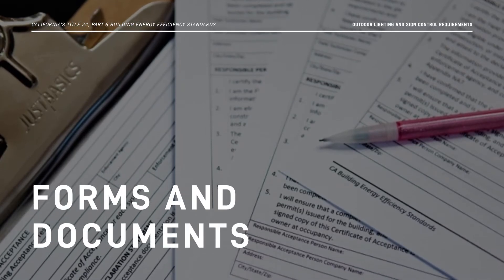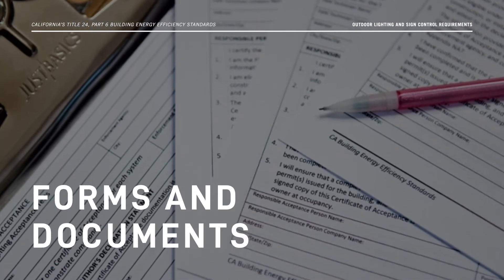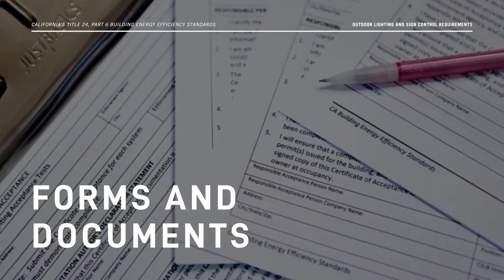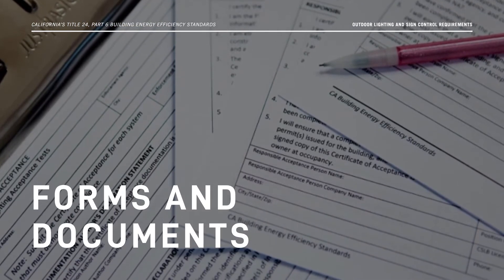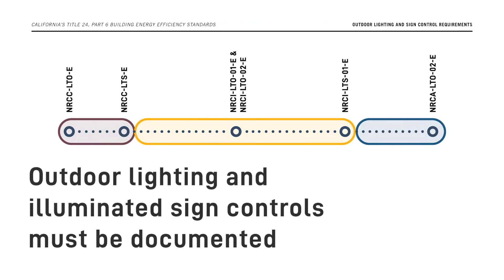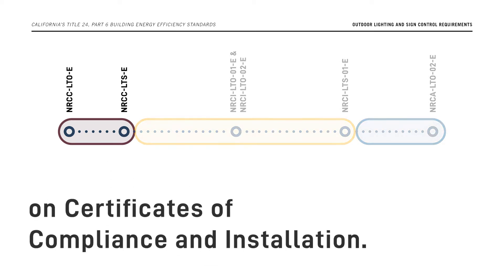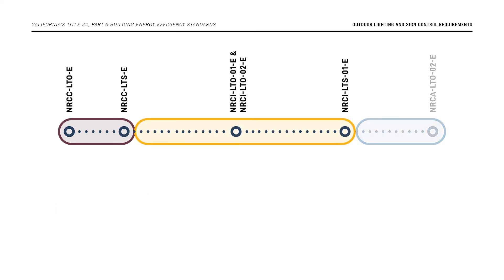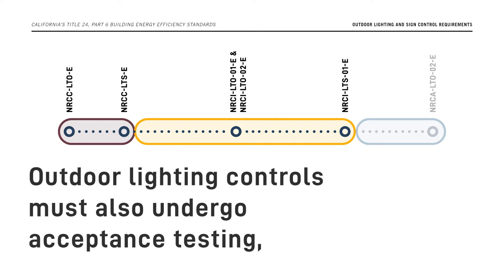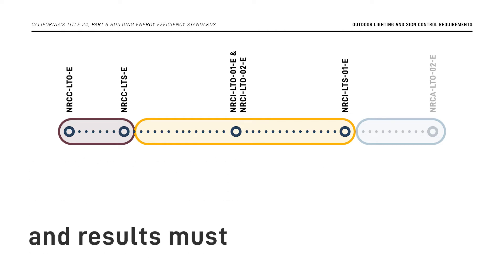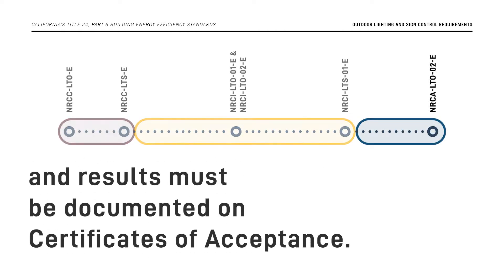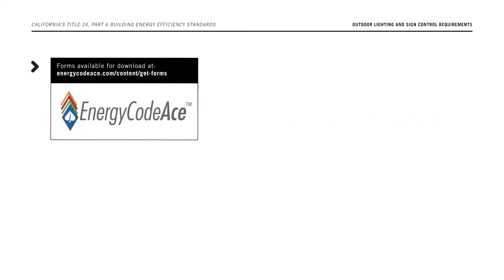We'll now discuss the certificates or forms needed to demonstrate Energy Code compliance to your local enforcement authority. Outdoor lighting and illuminated sign controls must be documented on certificates of compliance and installation. Outdoor lighting controls must also undergo acceptance testing, and results must be documented on certificates of acceptance. All forms are available for download as PDFs on www.energycodeace.com.